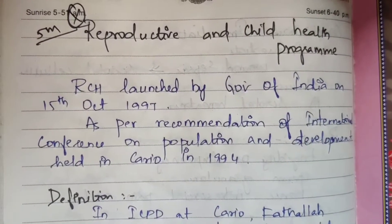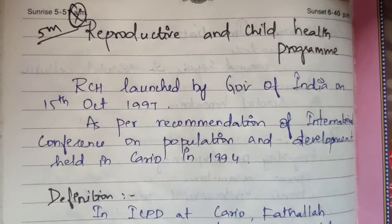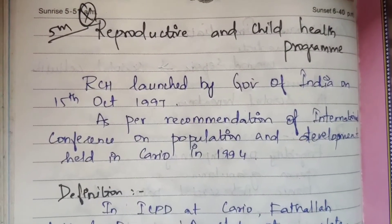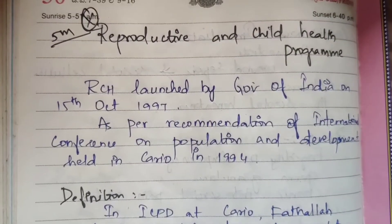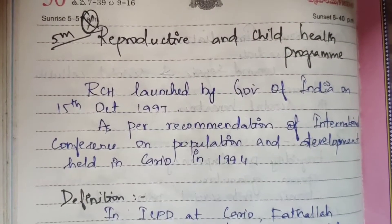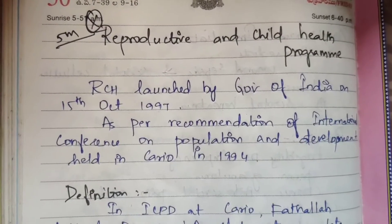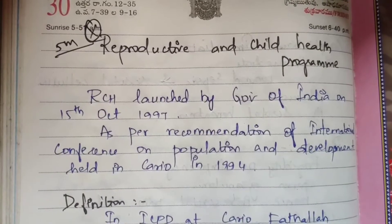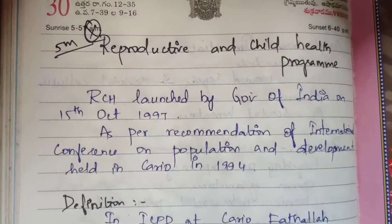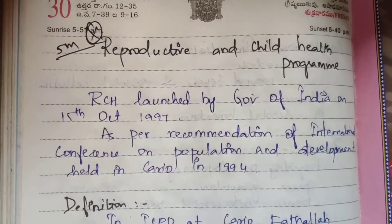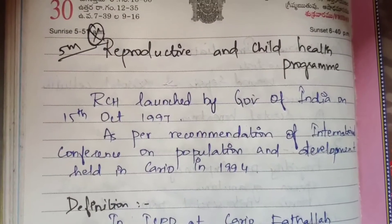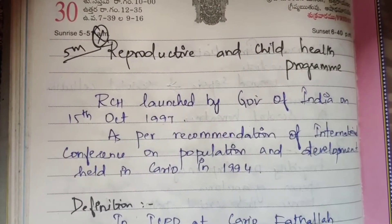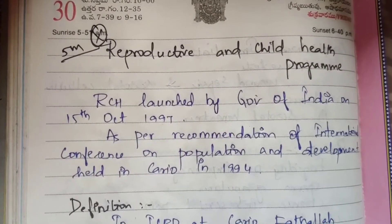RCH was launched by the Government of India on 15 October 1997, as per the recommendation of the International Conference on Population and Development held in Cairo in 1994. Based on that conference recommendation, the RCH program was officially launched.